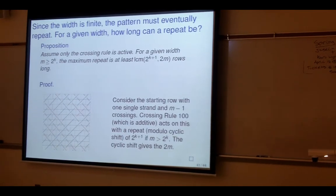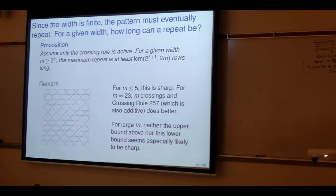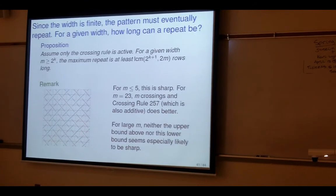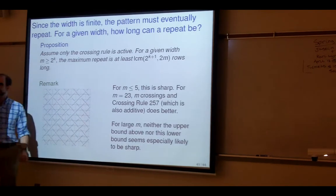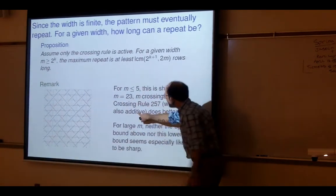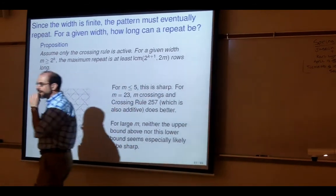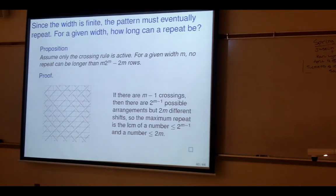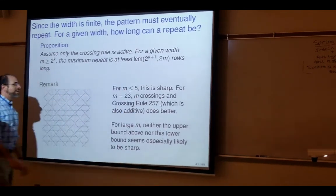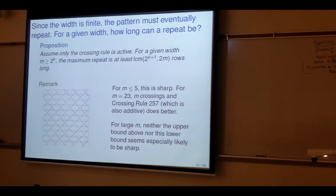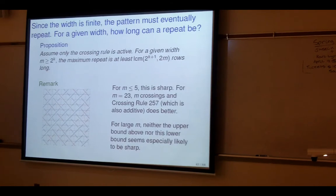I thought for some time that was the best you could do — it's not. For m up to 5 I ran Maple simulations. Reading results on elementary cellular automata with periodic boundary conditions, certain prime numbers and additive rules give a really long repeat. For m=23 you actually get longer than my bound. My current guess is that additive rules and either m or m−1 crossings give the longest repeats, but I haven't proved that — there's a lot of work left.